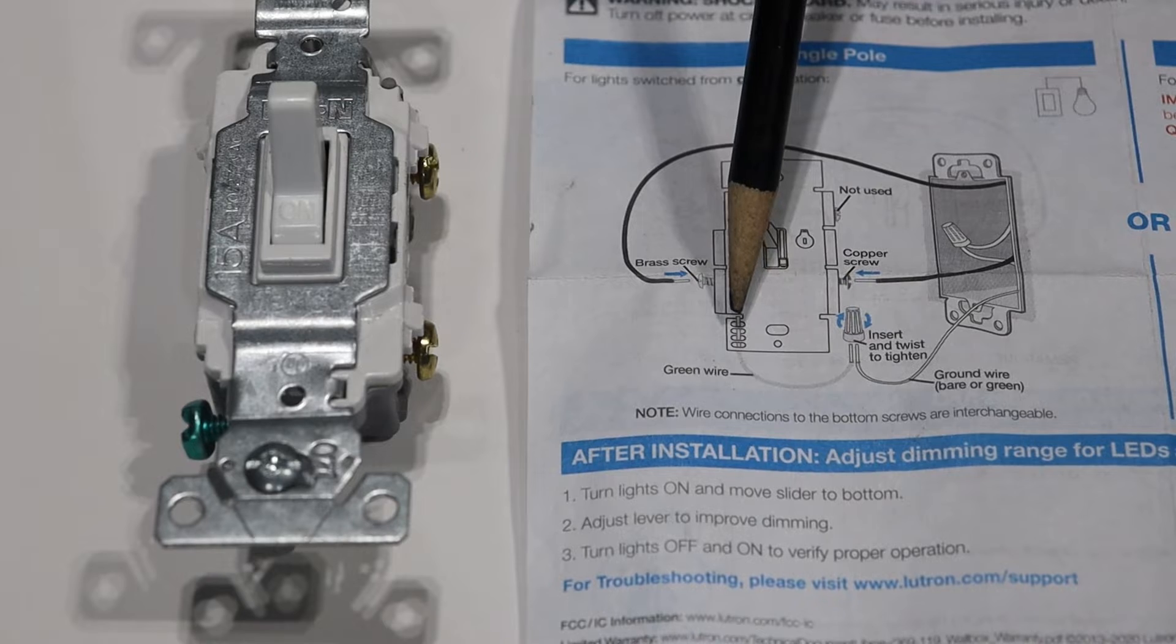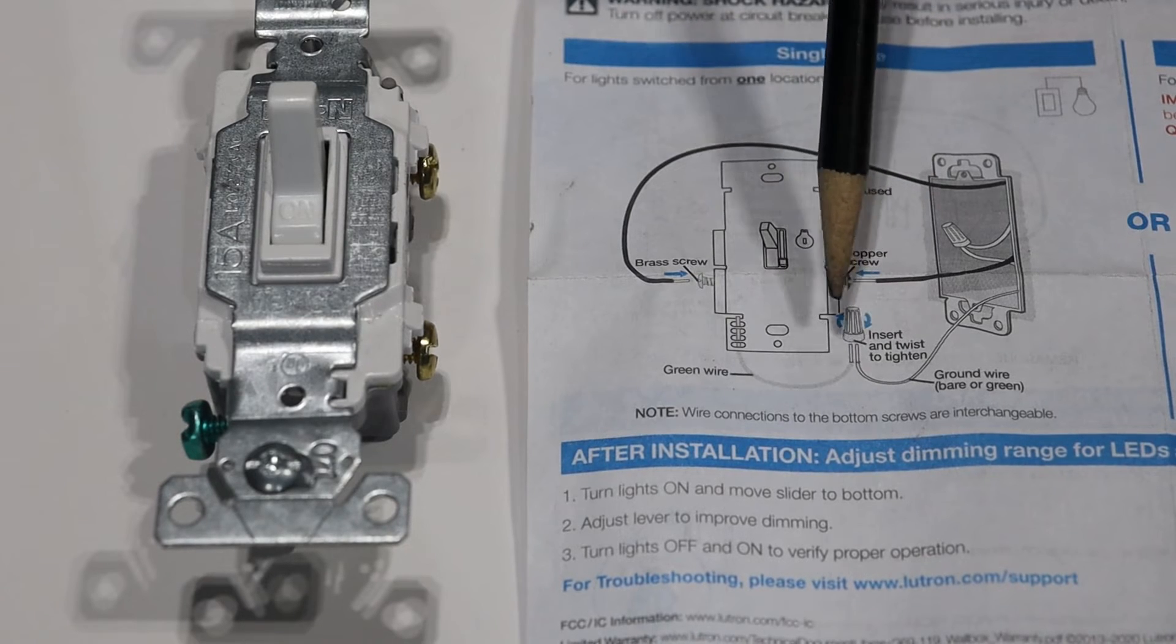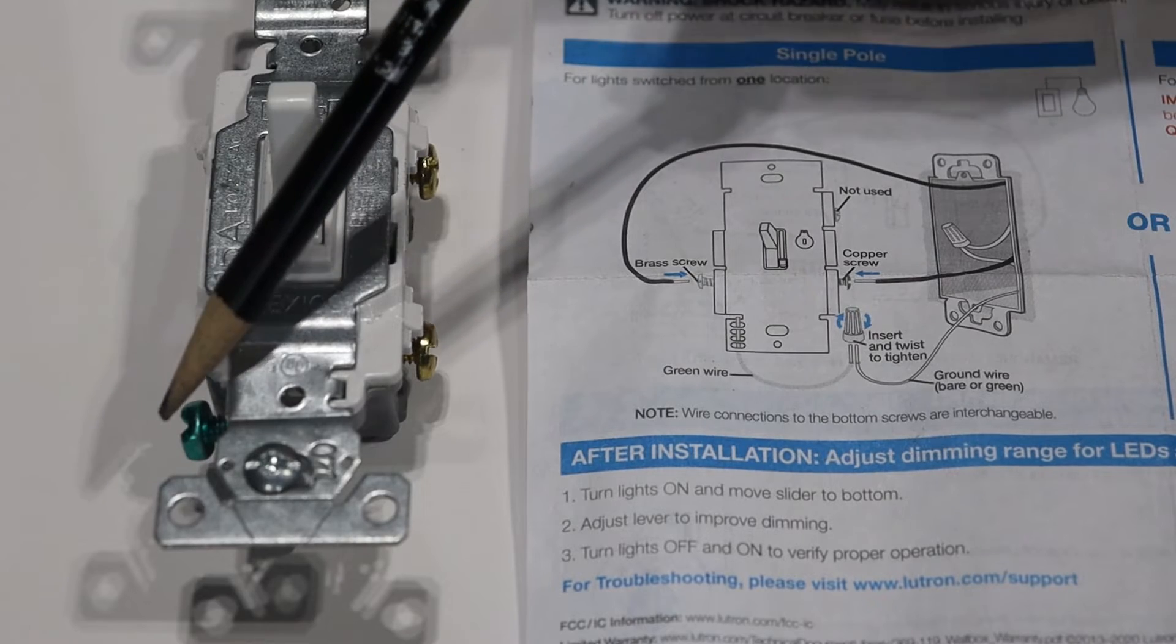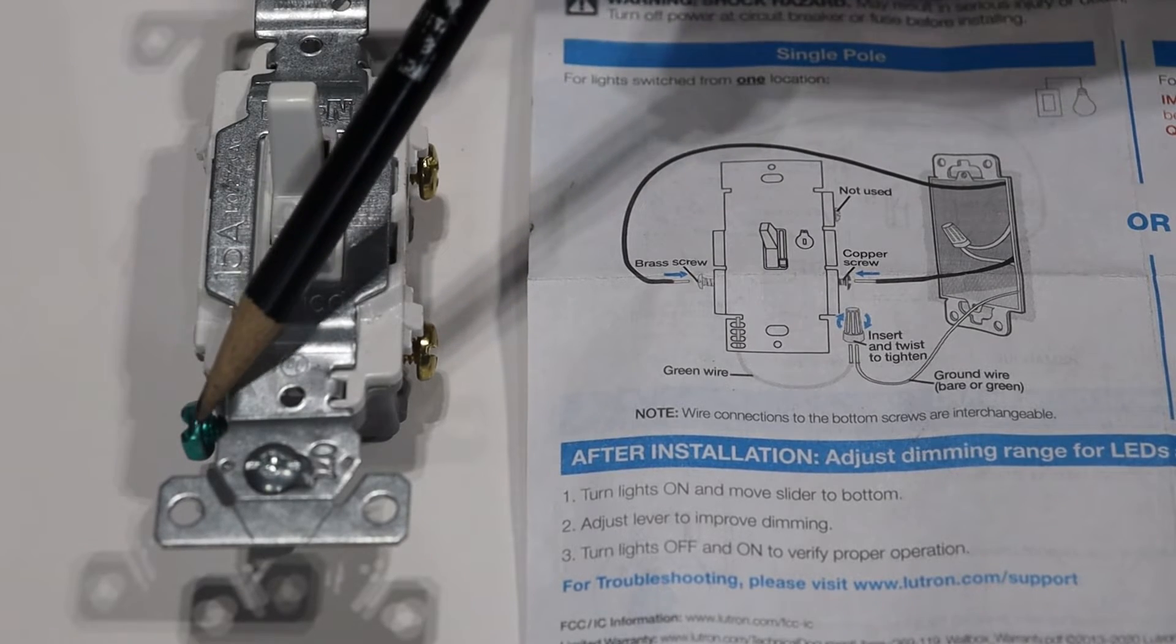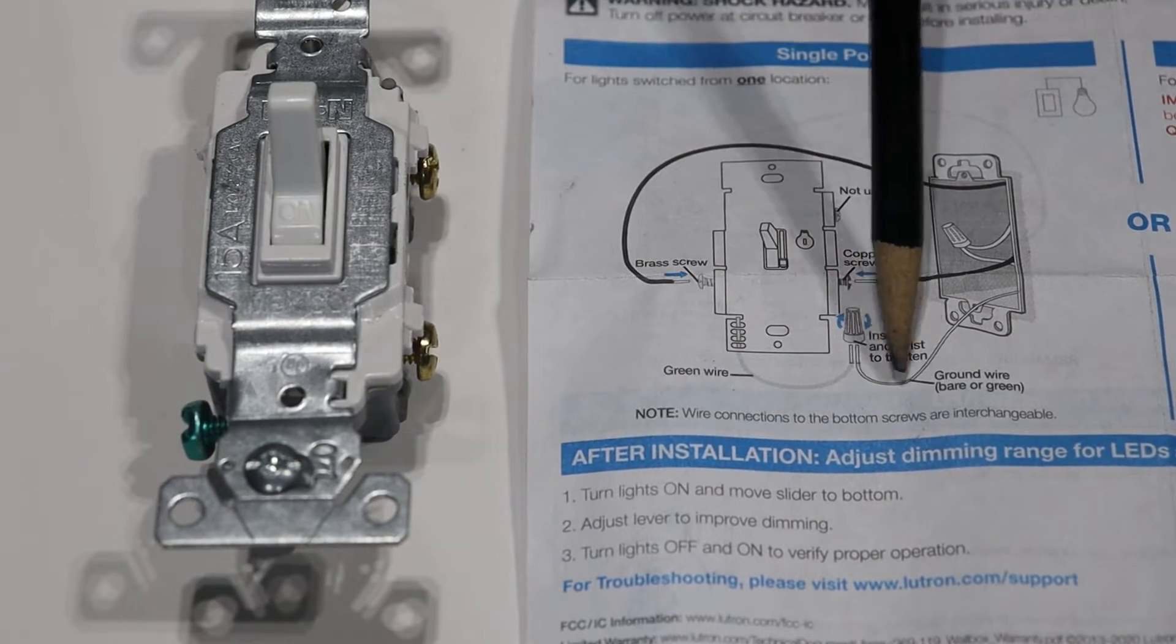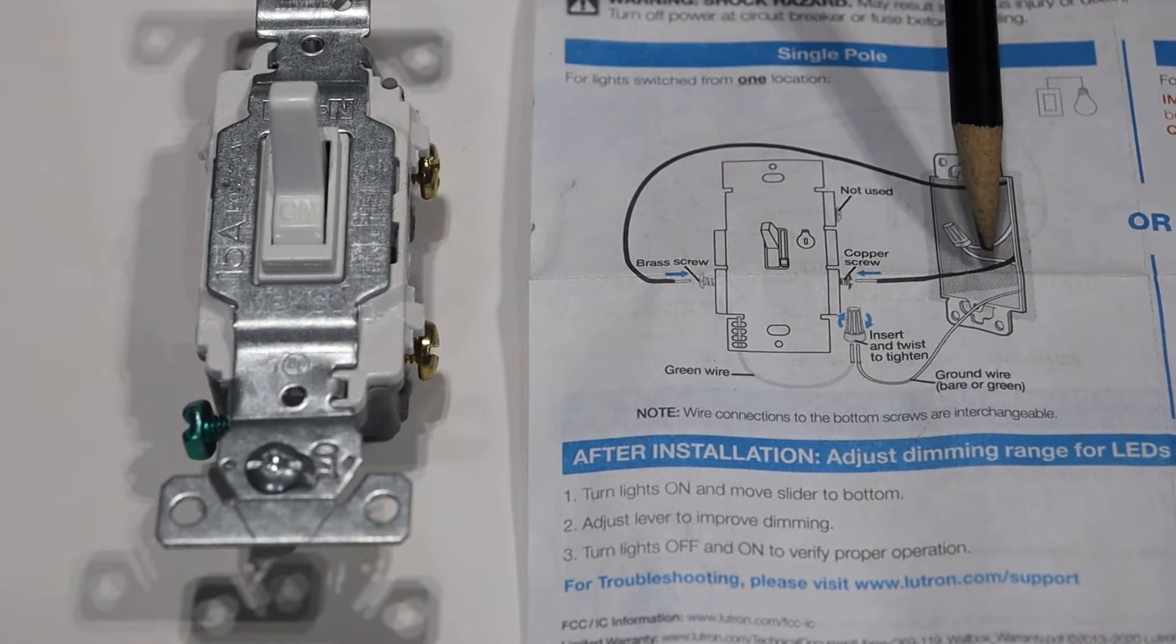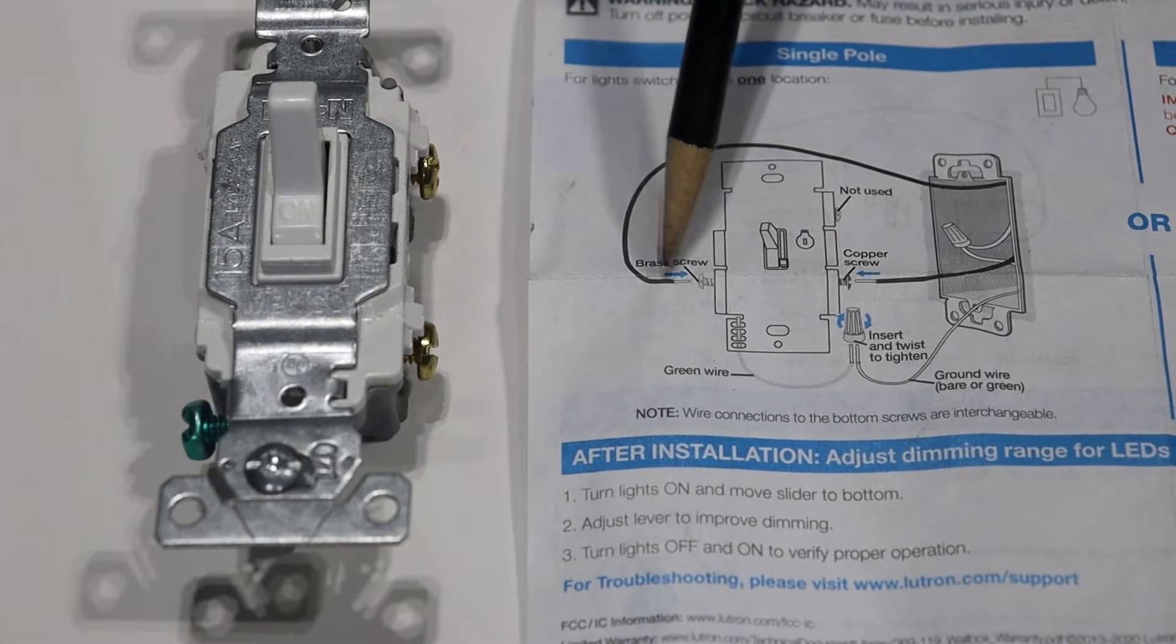With your ground wires, same thing. There's going to be a pigtail on the dimmer switch or if I was going to hook up this switch I would put a pigtail on the ground screw and then hook it up to the ground wire in the box. So the only thing that you really need to pay attention to is where the black wires are going.